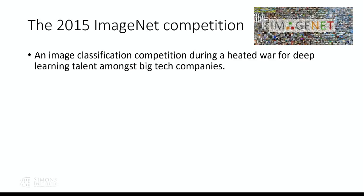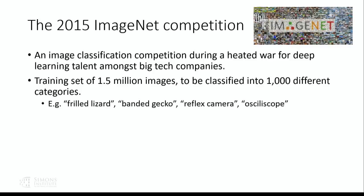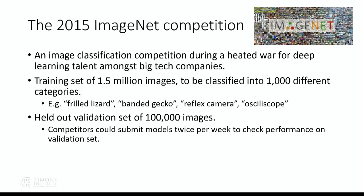Maybe a good example to begin with is the ImageNet competition, which was particularly interesting in its 2015 iteration. This is a classification competition where you've got a bunch of images — a lot of them, 1.5 million in the training set — and you want to categorize them into a bunch of pretty finely defined categories. The training images were made available to everyone, but competitors were scored on a validation set of about 100,000 images.